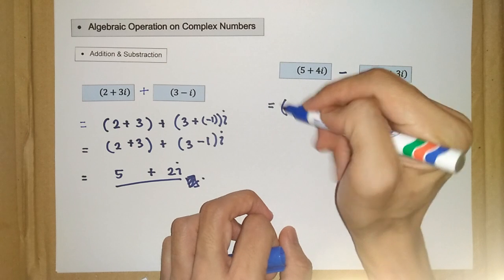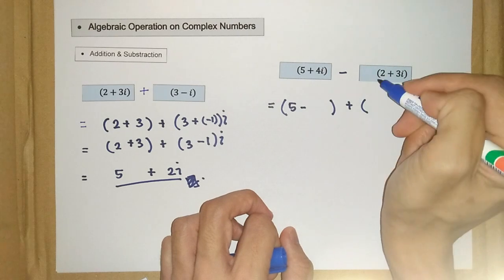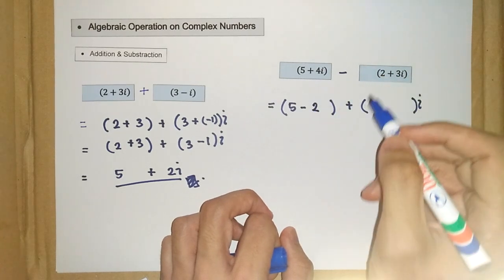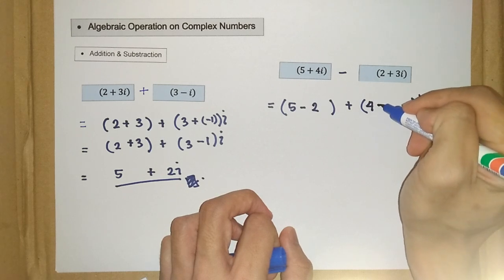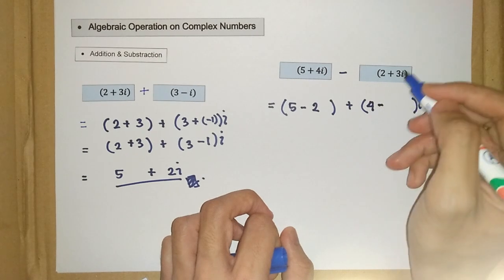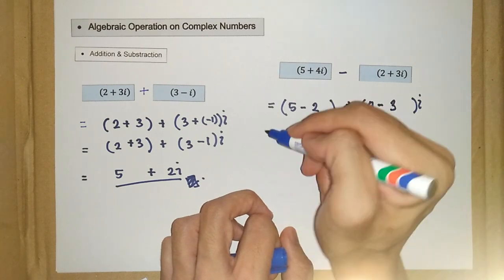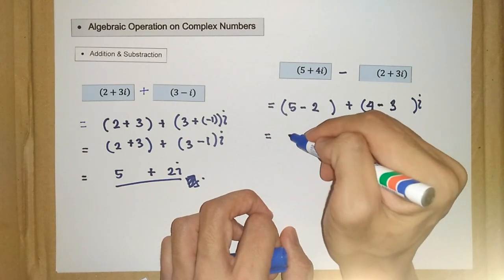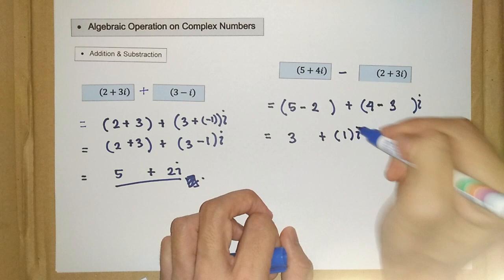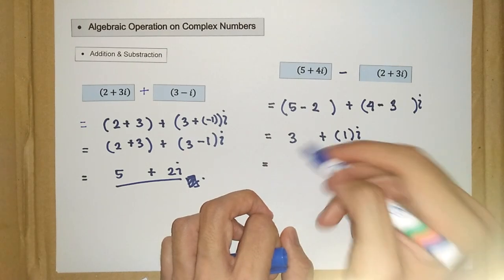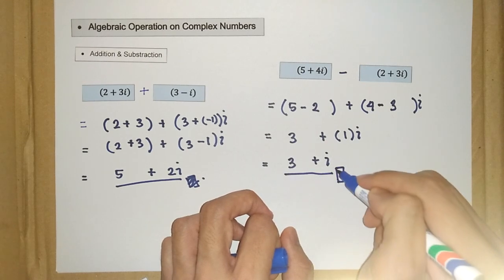So we have 5 here. Instead of plus, we have minus 2. So 5 minus 2. And for this one, we have 4 minus 3. So 5 minus 2 is 3, plus 4 minus 3 is 1. So we have 1i. And 1 times i is i. So 3 plus i. This is the answer for this example.